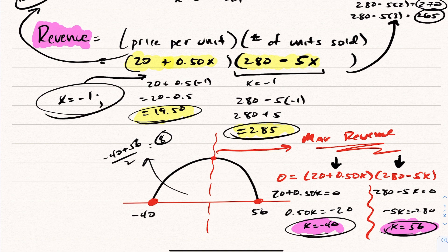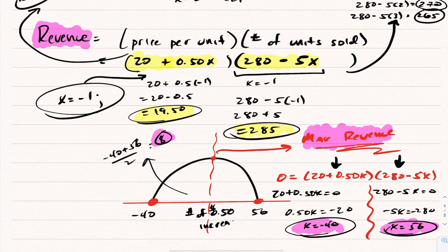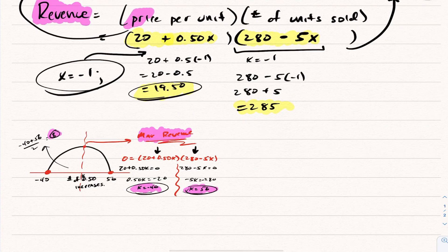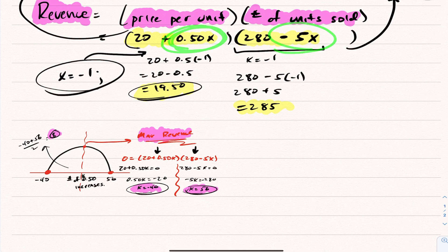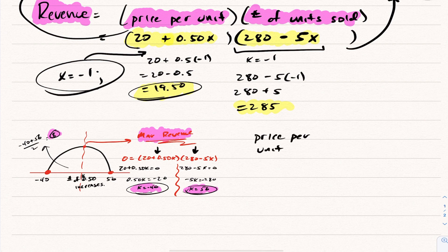X equals 8 is the ideal value — the number of 50-cent increases that generates maximum revenue. But the maximum revenue isn't 8; the x-axis represents the number of 50-cent increases. To find the actual price, I substitute X equals 8 into the price expression: 20 plus 0.5 times 8 equals 20 plus 4, which is $24.